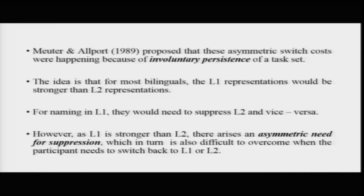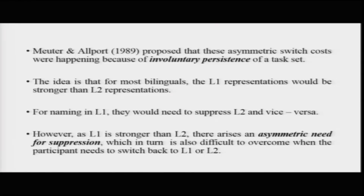They proposed this is happening because of what they referred to as the involuntary persistence of a task set. Involuntary persistence means that because you are naming in English, there is a sort of inertia or persistence of the English naming task set, and that is creating difficulty in shifting into the Hindi naming task. Probing a little bit deeper, for most bilinguals the L1 representations will be stronger and the L2 representations will be weaker. When you move from naming in L1 to naming in L2, you will have to suppress the L1 and start naming in L2. Because L1 is stronger, it will require much stronger suppression.